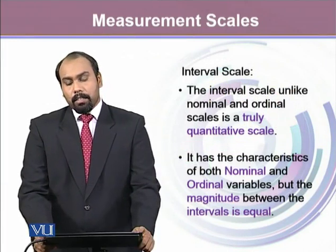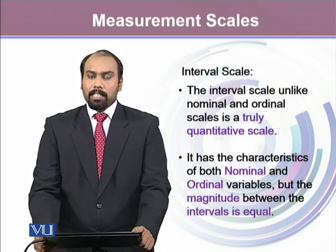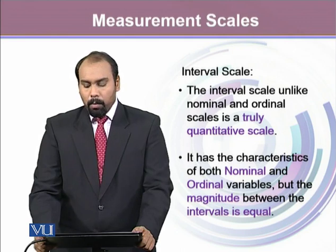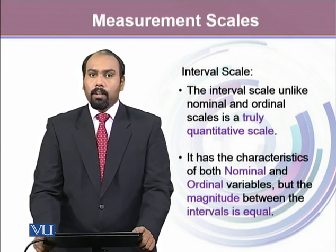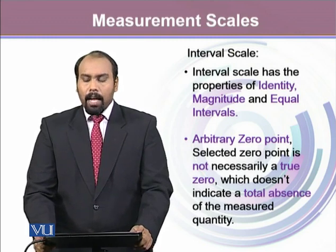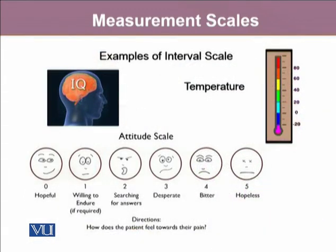The third scale of measurement is interval scale. Unlike nominal and ordinal scale, interval scale is truly a quantitative scale. Interval scale variables inherit the qualities of nominal and ordinal scale, and moreover they satisfy the third property of measurement, which is equal intervals. Interval scale variables have an arbitrary zero point — whenever a value turns out to be zero, it doesn't mean the usual way we interpret zero. For example, in temperature, when temperature is zero it does not mean heat has vanished; heat is still there, but we just can't feel it. Similarly, when the IQ level of a person is zero, it doesn't mean the person doesn't have a brain or the capacity to think.